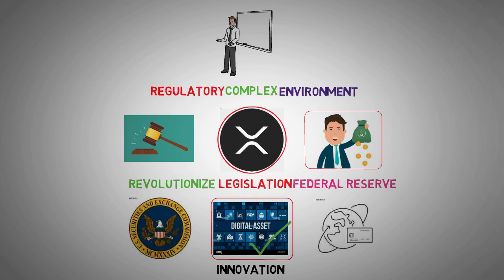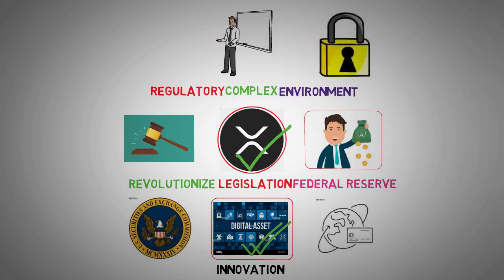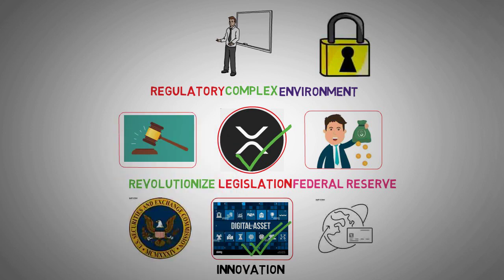However, like many digital assets, XRP has grappled with regulatory uncertainties. Enter the Digital Asset Market Structure and Investor Protection Act, spearheaded by Representative Don Beyer. This bill could serve as a beacon of hope for Ripple XRP and the broader digital asset market, aiming to provide much-needed regulatory clarity. By addressing jurisdictional ambiguities and proposing the issuance of a digital dollar, the bill could offer a significant boost to Ripple XRP's prospects, though the shadow of the ongoing SEC lawsuit alleging an unregistered securities offering still looms large.